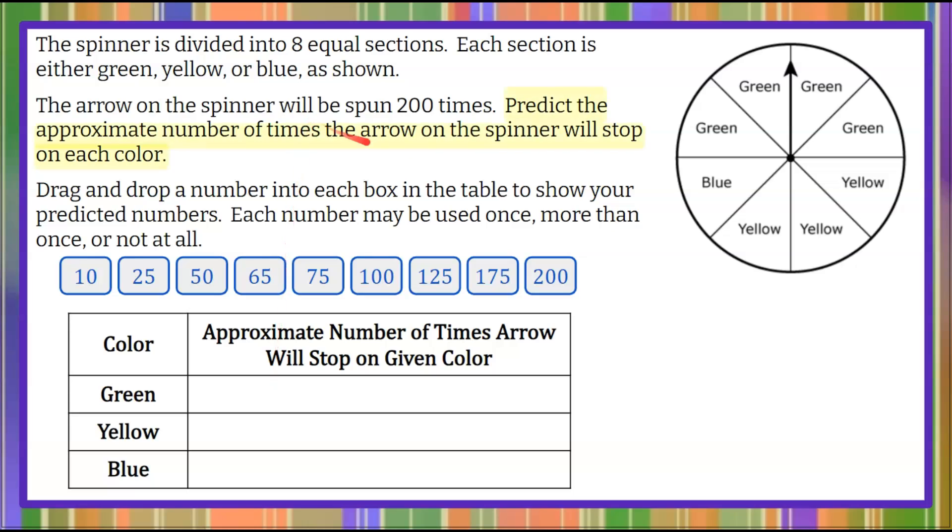Welcome back. We're going to predict the approximate number of times the arrow on the spinner will stop on each color. We know that we are going to do this a total of 200 times. So we're going to use proportions and our probable outcomes.